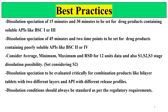Now the best practices — this is a very important and valuable part of this video. Dissolution specifications of 15 and 30 minutes should be set for drug products containing soluble drug substances. Always keep in mind the behavior of your API: is it soluble or insoluble? Dissolution specifications at 45 minutes and 2-point specifications should be set for drug products containing poorly soluble APIs like BCS Class 2 and 4. Always consider the average, minimum, maximum, and % RSD for 12 units of data, and consider S1 and S2 stage dissolution possibility. Always set dissolution as per the S2 stage, that is the second stage dissolution on 12 units.